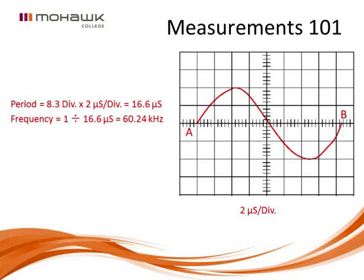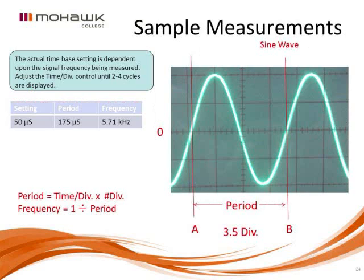For a sine wave example with the time base at two microseconds per division, between points A and B representing one complete cycle is 8.3 divisions. Multiplying 8.3 divisions by two microseconds per division gives a period of 16.6 microseconds. Dividing that into one gives the frequency. In another example, with the time base at 50 microseconds per division, the period is 175 microseconds, giving a frequency of 5.71 kilohertz.